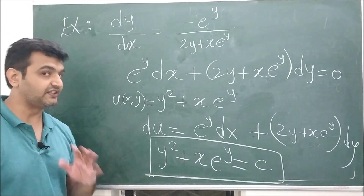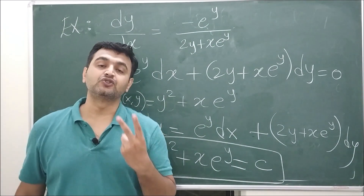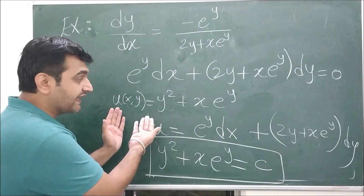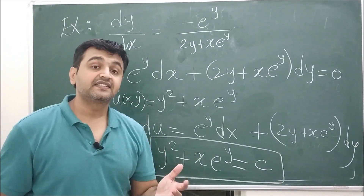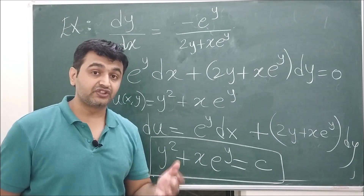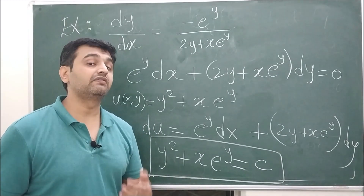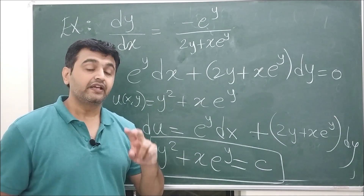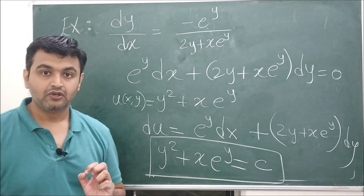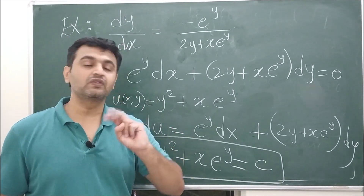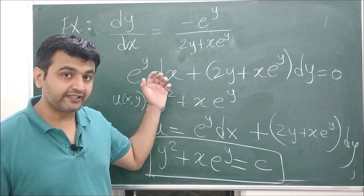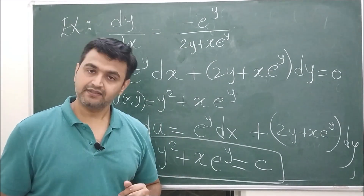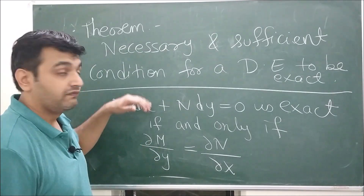One can ask two questions here. First: when will we know that such a u exists or not? Here I gave you u directly, but what is the guarantee such a u exists, and under what conditions will it exist? Second question: if such a u exists, how do we find it? So existence and finding u are the two questions. For existence, we will see a theorem — the necessary and sufficient condition for exactness.